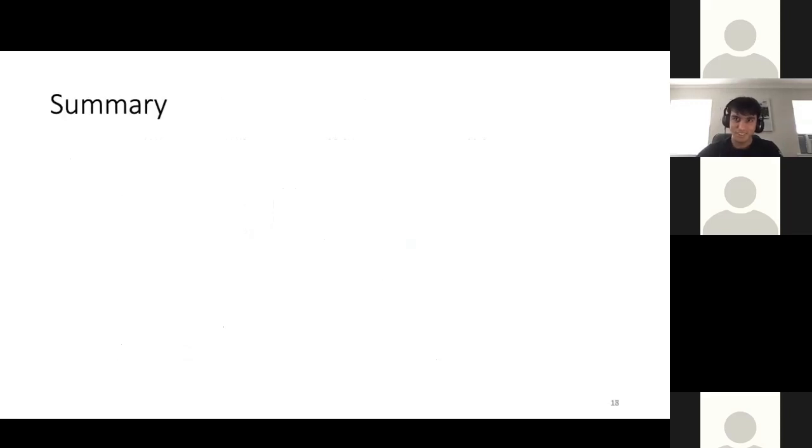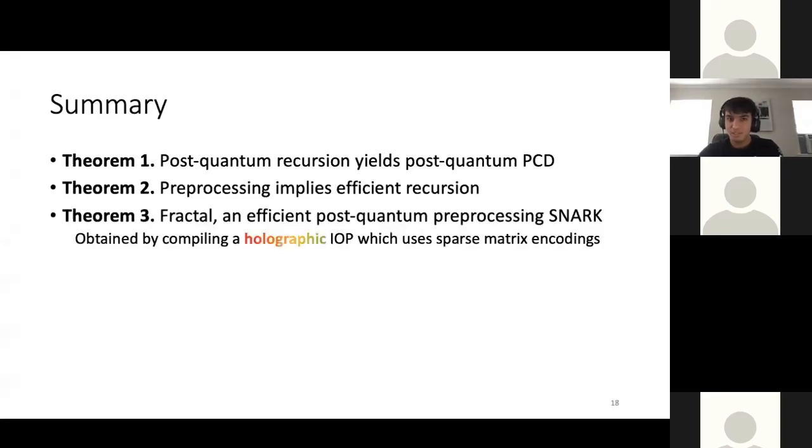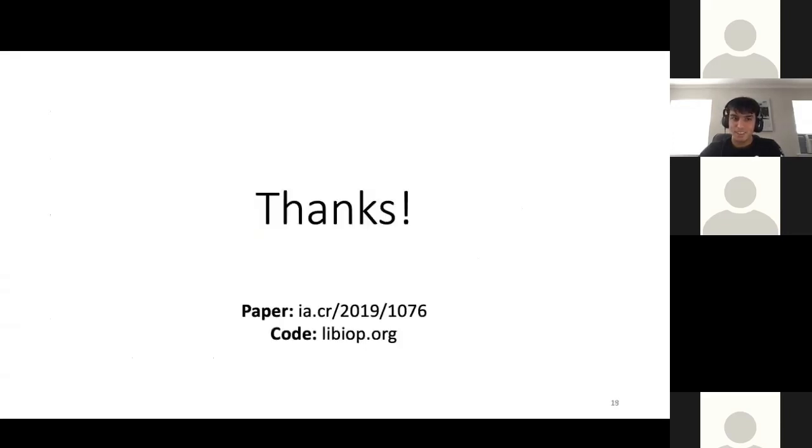That's all I wanted to talk about for how we construct fractal. And let me zoom out and summarize what I was talking about. So first we showed that post-quantum recursion yields post-quantum proof-carrying data. Then pre-processing is what implies efficient recursion. Third, we then construct fractal, which is an efficient post-quantum pre-processing snark. And the way we got fractal was by compiling a holographic IOP into a pre-processing snark. And we use sparse matrix encodings in order to get a holographic IOP. Together, by combining these, you get the first construction of efficient post-quantum proof-carrying data. And we provide an implementation, fractal as a pre-processing snark and fractal as a recursive snark that uses algebraic hashes. Thanks for your time.